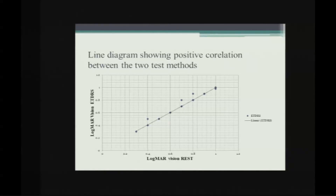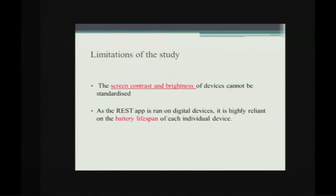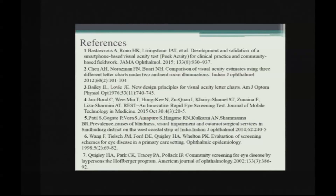The line diagram shows a strong correlation between the app and ETDRS test results. This app is user-friendly, easily downloaded, and portable — you carry mobile technology already. It is time-saving and enables accurate mass screening; you can train unskilled volunteers to utilize them in early detection of low vision and further management. Limitations include that screen contrast and brightness cannot be standardized across devices, and battery lifespan is also a constraint.